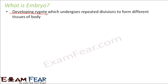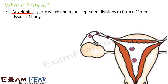The process starts with the zygote, which is just one cell. It undergoes many divisions to form a collection of cells. Out of those multiple cells, a few cells combine together to form specific tissues of the body. Some tissues then combine together to form specific organs, and that is how the entire organism is formed.